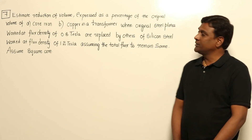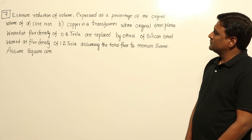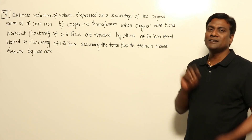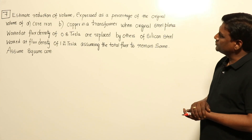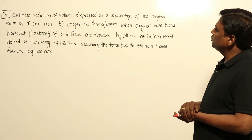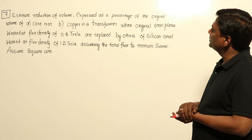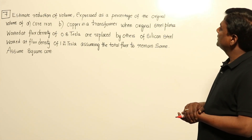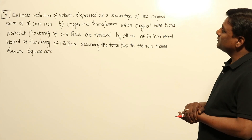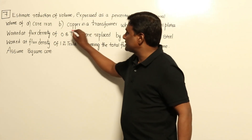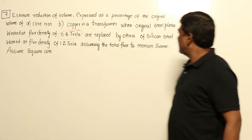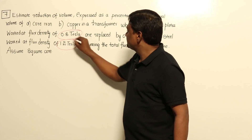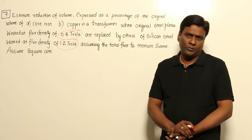This is a beautiful question. In this question, as we discussed previously, flux density is an art term to play with. Estimate the reduction in volume — expressing the percentage of original volume of core iron copper — in a transformer when original steel plates worked at flux density of 0.8 tesla are replaced by others of silicon steel worked at 1.2 tesla, assuming total flux to remain same. Assume square core.